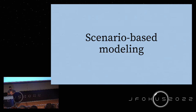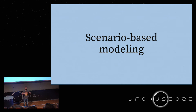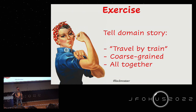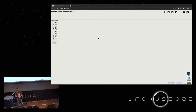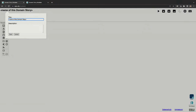Now I'd like to do a little exercise with you. I'll be the moderator and you will be my storytellers. We need a story we all know, so let's use 'travel by train' — many of you probably arrived by train. I'll use an online tool for domain storytelling since we don't have a whiteboard here. I start by writing the name of the story: 'travel by train.' The traveler buys a ticket, and we also look at the timetable to find which train to take.